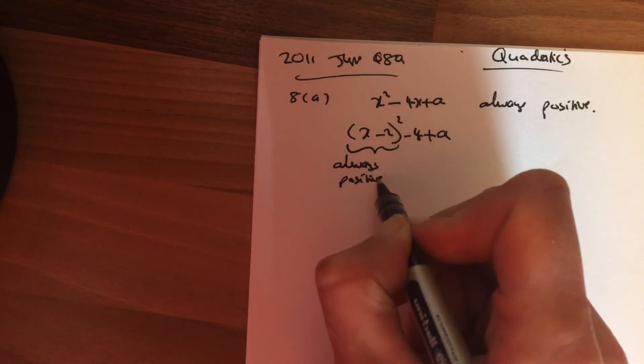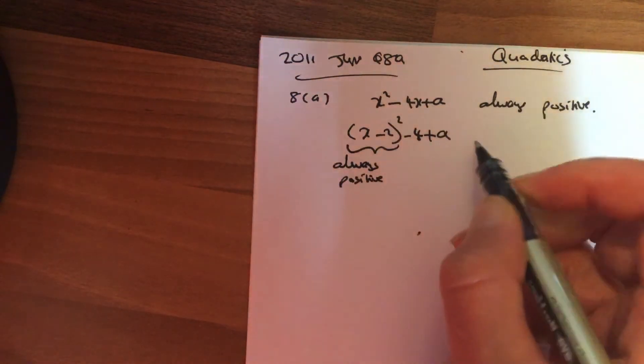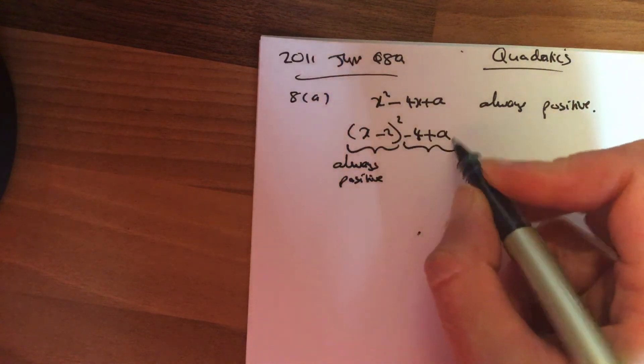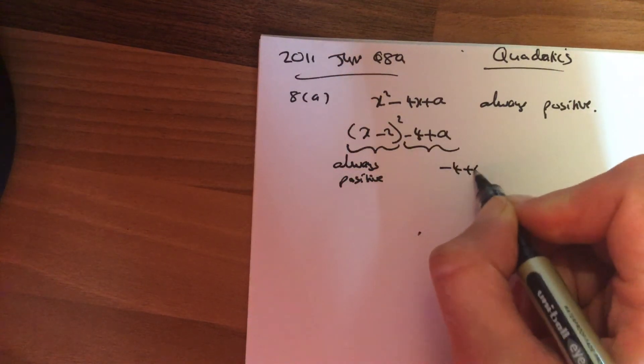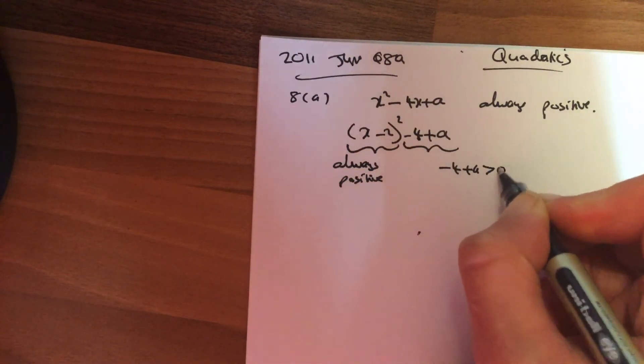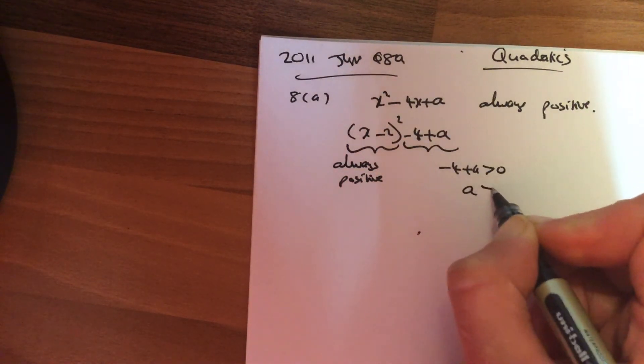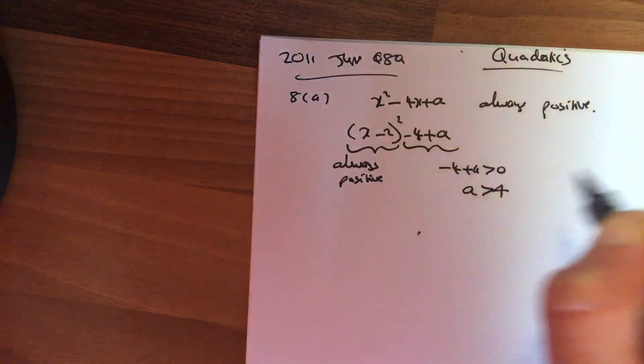So in order for the whole expression to always be positive, I need this bit here to be above 0, so a is above 4.